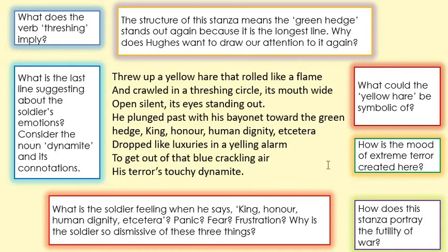You've also got extreme terror — quite visceral imagery: the hare's fur is rolling like a flame, it's crawling, its mouth wide open in silence, its eyes standing out. It's quite graphic and it's meant to make you feel uncomfortable, because that's how the soldier is feeling too. Hughes is talking about a hare, but really he's talking about any of these soldiers — these young boys sent to war. And again you've got that idea of futility and pointlessness: what does the soldier think at the end? He pays no heed to human dignity, and that idea suddenly becomes meaningless because he's just trying to survive. What does the last line suggest about the soldier's emotions? 'His terror's touchy dynamite' — is it that he can no longer contain his feelings? Is it that his life is about to expire? It's up to you.